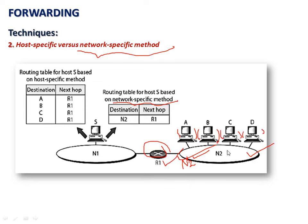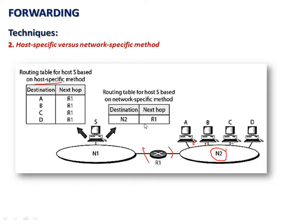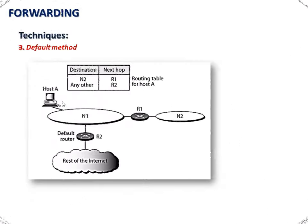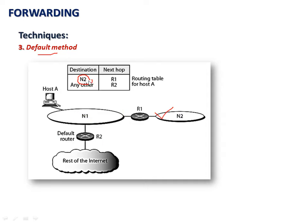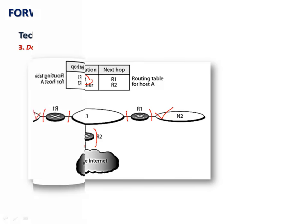So, host-specific means the router should have information about hosts A, B, C, and D in network 2, but in the network-specific method, the router does not need information about individual hosts — it only has knowledge of the network name. The next technique is the default method. In the default method, network N1 is connected to network 2 with router R1, and the rest of the internet network is connected with a default router R2. Packets destined for network N2 are forwarded through R1, and all other addresses destined for the rest of the internet are forwarded through the default router R2.